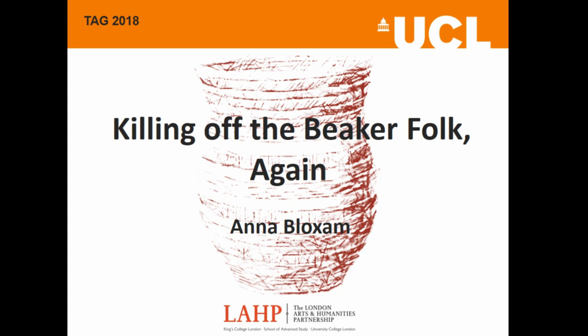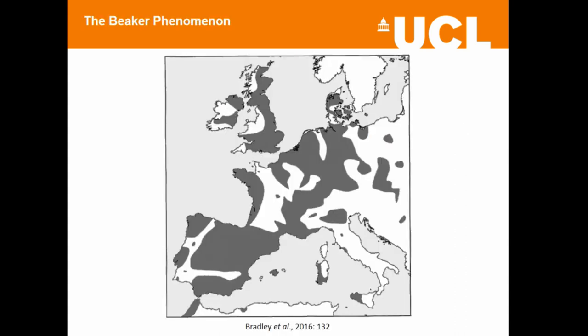I'm going to be talking today about some of my ongoing PhD work, which is mostly looking at funerary diversity in the British Roman period. I'm going to give you a bit of an overview about what we're looking at and why, and hopefully indicate why I want to kill off the Beaker folk. The Beaker phenomenon was a widespread cultural phenomenon found across Europe in the 3rd to 2nd millennia BC, and in Britain it covers the transition between the Neolithic and the Chalcolithic, but also the transition between the Chalcolithic and the early Bronze Age. So it's a very crucial stage of British history.